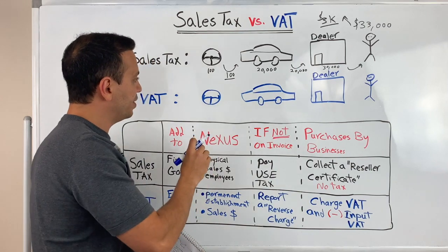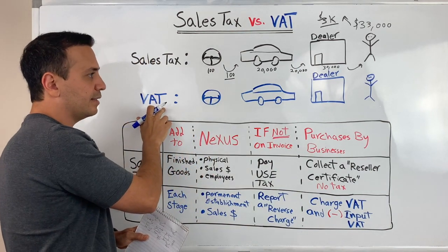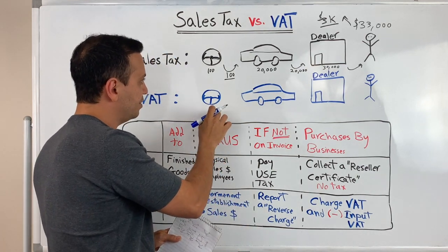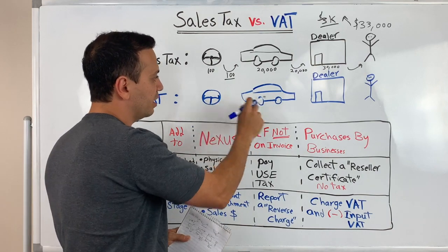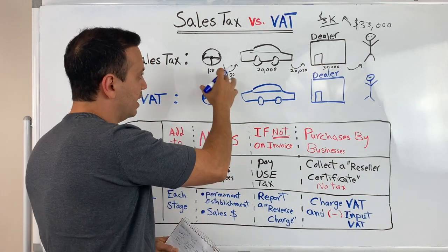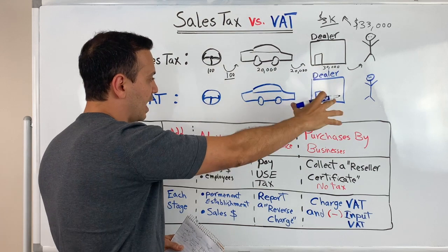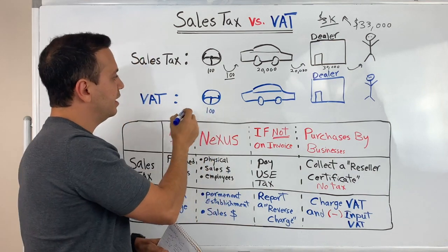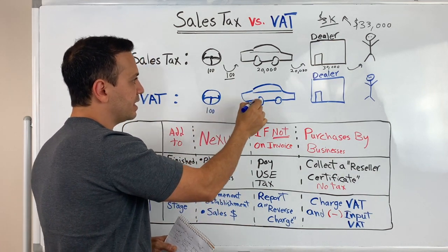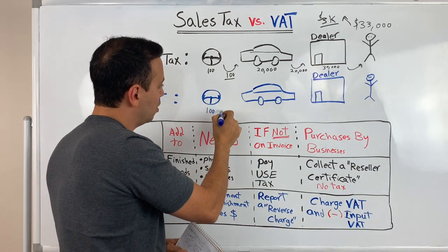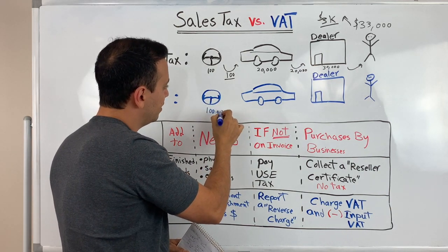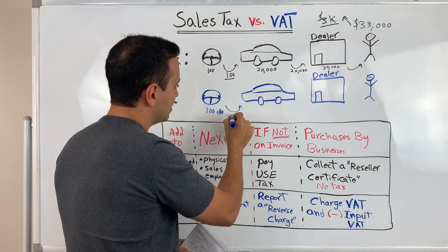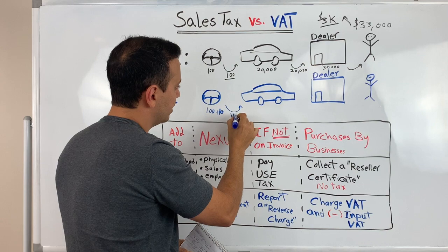Now let's walk through the same scenario but in a country that implements a value-added tax. Let's say this is the UK or the EU, and we have a manufacturer of the steering wheel who also wants to sell it to the car manufacturer for 100 euros — the same number, apples to apples. In VAT, you need to add the tax at every stage of the process. So the steering wheel manufacturer will add 10 euros — let's say the VAT is 10% — so the invoice going out is for 110 euros.